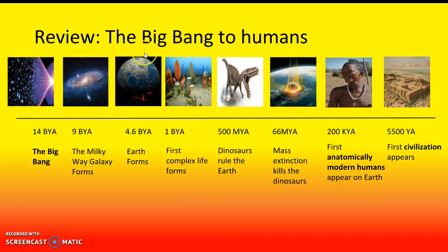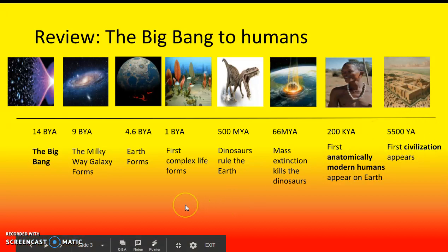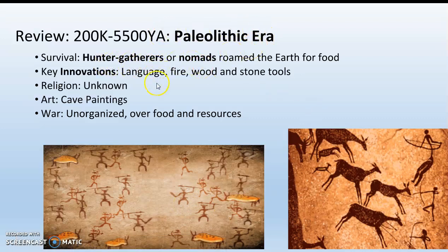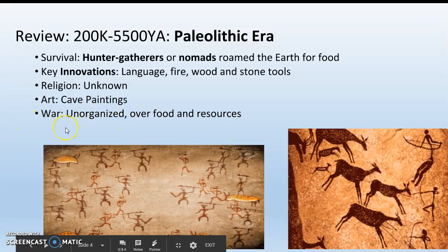We've talked about the Big Bang and the timeline of how the universe formed, then eventually Earth was formed, and then eventually humans started walking the Earth and created the first civilizations about 5,500 years ago. We talked about the Paleolithic era and how people were hunter-gatherers, with key innovations being language, fire, and stone tools, and they mostly fought over food and other resources.